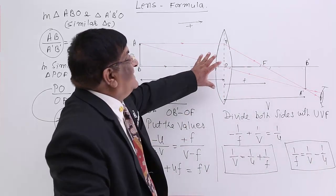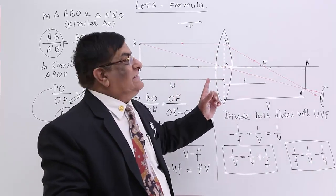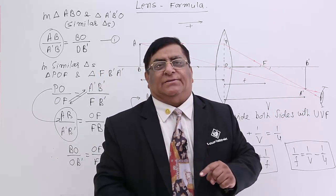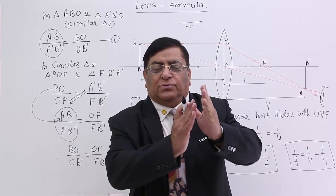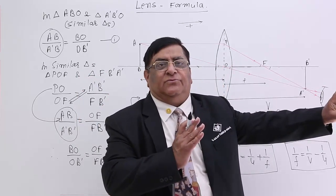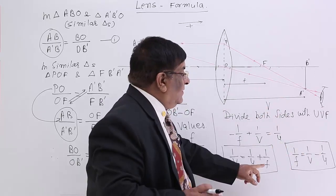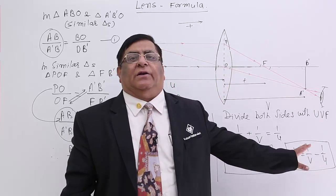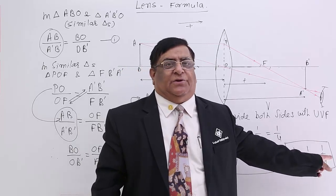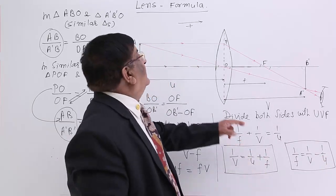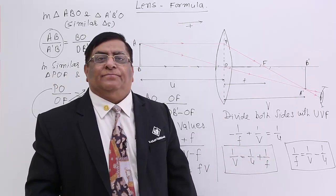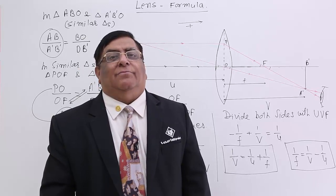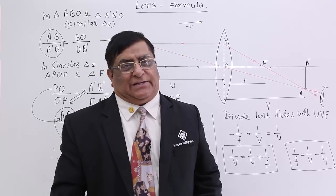To find focal length experimentally: place a lens at a fixed distance, put an object, and see where the image is formed. With U and V known, use 1/F = 1/V − 1/U to calculate the focal length. This relation between U, V, and F is known as the lens formula. Magnification will be covered in the next lecture.